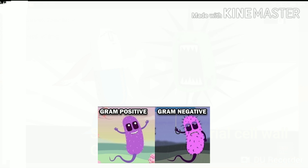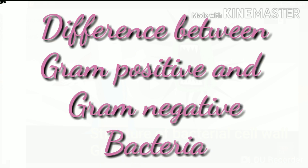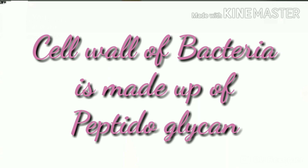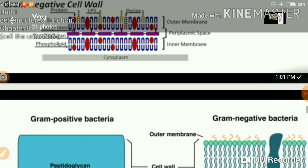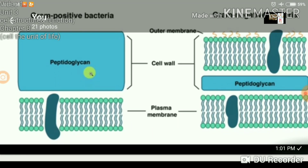Let's see what are the differences between gram-positive and gram-negative bacteria. We know that the cell wall of all bacteria is made up of peptidoglycan. Both gram-positive and gram-negative bacteria have this peptidoglycan. But what is the difference?